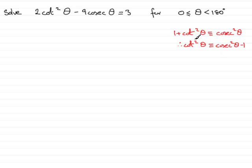If I substitute for cot squared theta and write cosec squared theta minus 1, that's going to give me an equation in one trig function, cosec squared theta. That's basically where we're going to start.